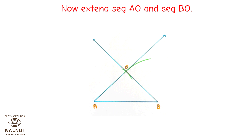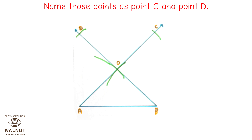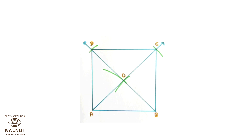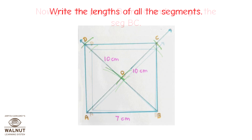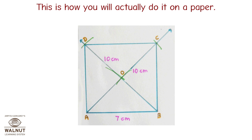Now extend segment AO. With O as center, draw arcs of 5 cm on both extended rays. Name those points as point C and point D. Now join the points A and D to get segment AD. Now join the points C and D to get segment CD. Now join the points B and C to get segment BC. Write the lengths of all the segments. ABCD is the required parallelogram. This is how you will actually do it on paper.